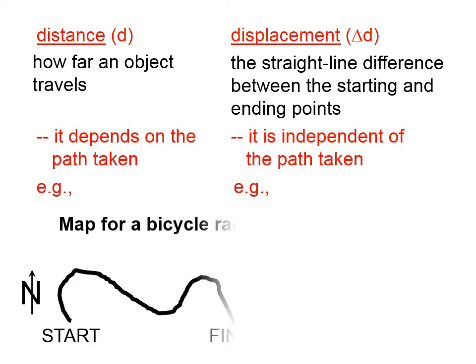Displacement simply accounts for where you start and where you stop. For example, if we have a map for a bicycle race, the distance that is traveled is, let's say, 45 miles, and you can see that there's a curved path.